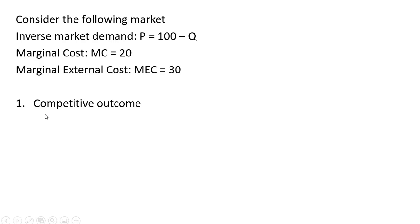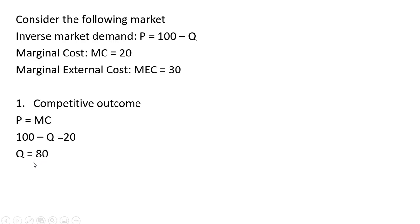Let's start with the competitive outcome. In perfect competition, price equals marginal cost, so setting 100 minus Q equal to 20 and solving for output, we get Q equals 80 and the price is $20. We can verify by plugging 80 back into the inverse market demand: 100 minus 80 is also 20.